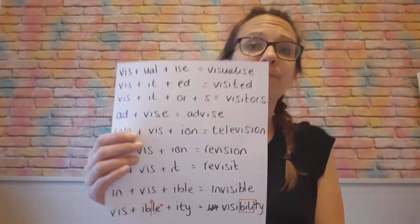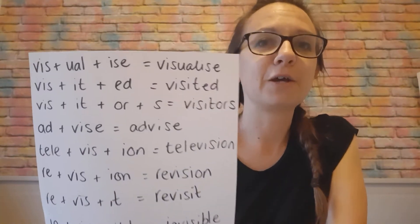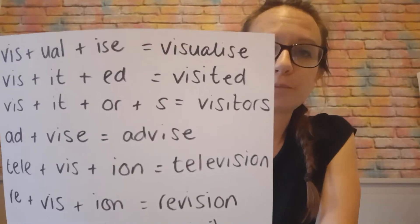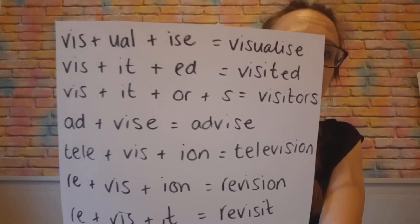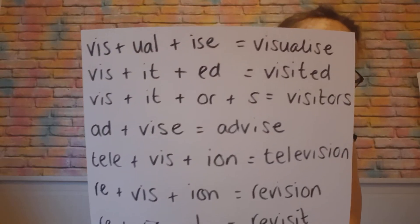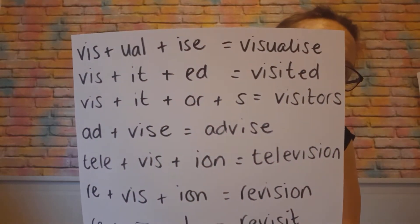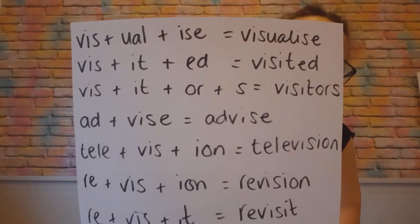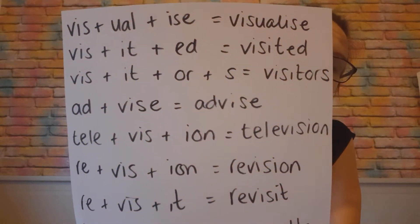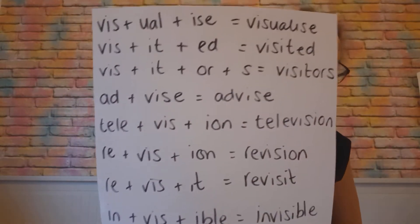So I'm going to show you the word sums that I made here. You can see there's a whole page and there are loads more than that as well. So at the top there I've got 'visualize', and that is the verb to imagine something in your head - so again, kind of seeing it, we visualize it. We've got 'visited' - going to see somebody. We've got 'visitors', and that OR suffix relates to a person who does something.